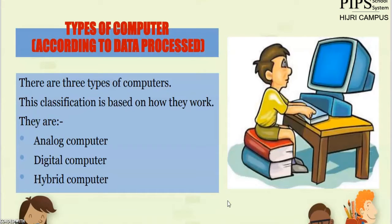Computers are a system — they get input from the user, process data, and give back the output. On the basis of data processing, computers are classified into three different types: analog computers, digital computers, and hybrid computers.